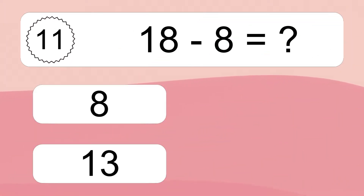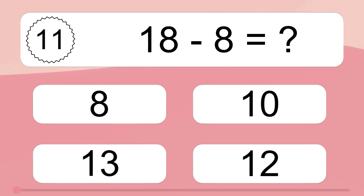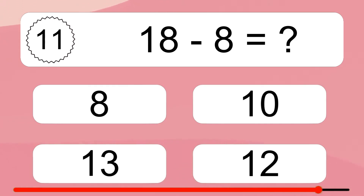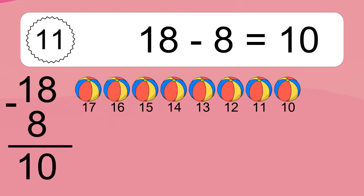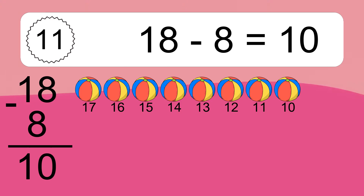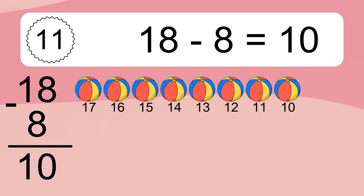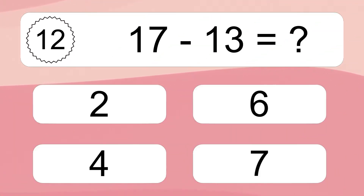18 minus 8 equals what? 18 minus 8 equals 10. Let's count it: 17, 16, 15, 14, 13, 12, 11, 10.